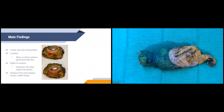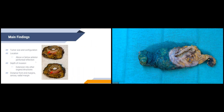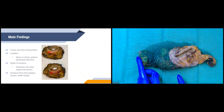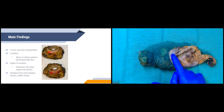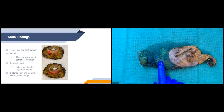For our main findings we describe the tumor: size, configuration — you can see the tumor here indicated by the red arrows on the posterior side, with normal mucosa on the anterior side. We also describe tumor location (above or below the anterior peritoneal reflection), depth of invasion, extension into other organs or structures, distance to the distal and proximal end margins, distance to the serosa, and distance to the radial margin.